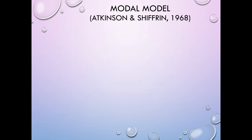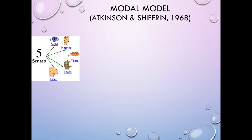Let's start with Atkinson and Shiffrin. You've got the world out there producing stimuli for you to collect either through sight, hearing, taste, touch, or smell — five senses collecting information from the environment. Generally, information is being collected by all five of those senses simultaneously.